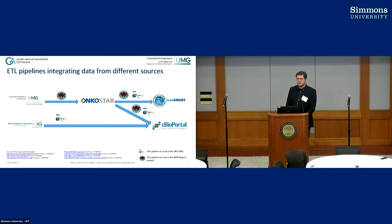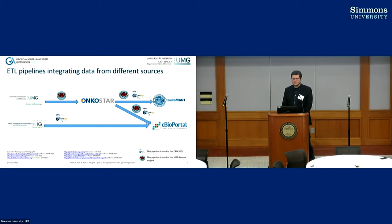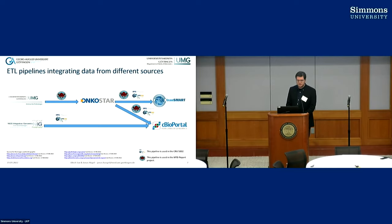We parse those files and use the REST API from the OncoStar system to import the data directly. One large benefit is increased data quality, since it's no longer copied by hand. Study nurses previously had to copy around 60 variants per patient — requiring a lot of time, and human mistakes are inevitable. By automating this process we make it less error-prone. We've also sped up the process from one hour per patient to five minutes or less.